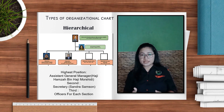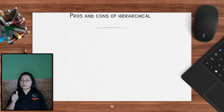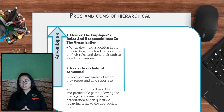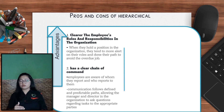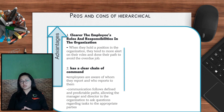The officials with higher positions but lower than the Assistant General Manager also have their own branch and staff under them. The pros of the hierarchical type are: first, it clarifies employees' roles and responsibilities. When they have their own position, people tend to be more alert to their roles and complete their part to avoid overdue work. Additionally, hierarchy has a clear chain of command — employees are aware of whom they report to and who reports to them, meaning communications follow defined and predictable paths, allowing managers and directors to direct questions to the appropriate parties.